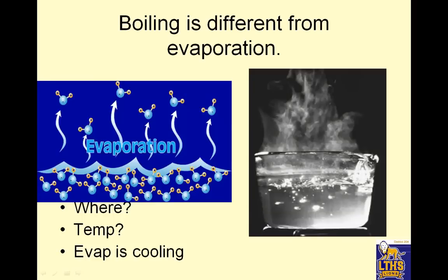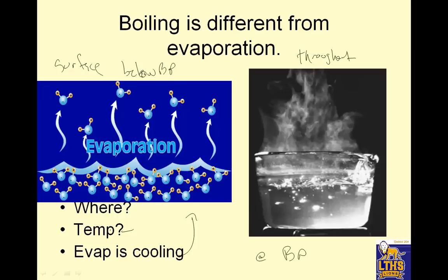Boiling is different from evaporation. Evaporation occurs at the surface, below the boiling point, and it is a cooling process. Boiling occurs throughout the liquid, at the boiling point, and only at the boiling point — it's at a constant temperature. Remember on those heating curves, those temperatures during phase changes were constant.